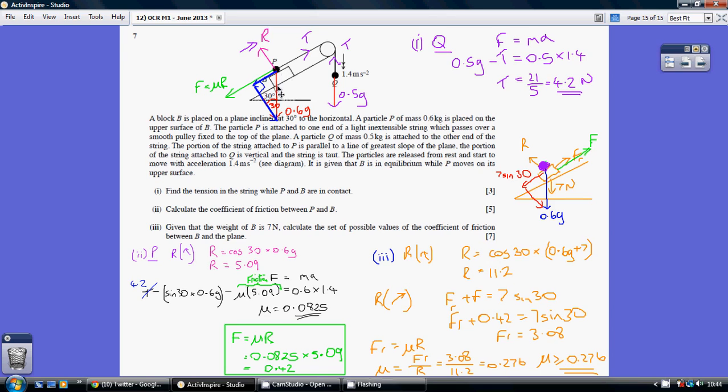So start off by resolving perpendicular to the plane, so we have R equaling cos 30 times 0.6G. We're obviously not moving up or down in this direction, so the forces cancel out. So we have R equaling this blue force here, so that's our adjacent force, so that's why it's 0.6G times cos theta, cos 30 rather.